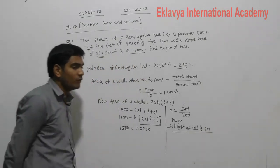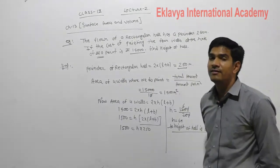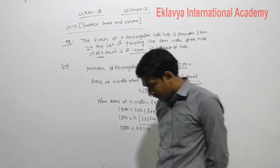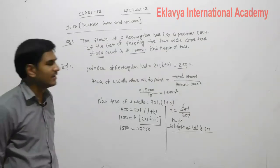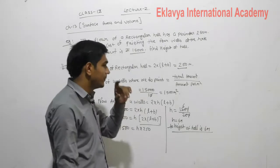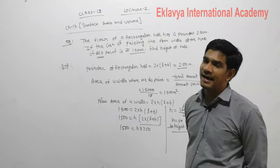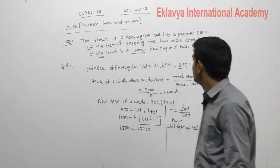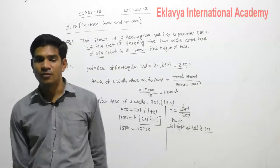To summarize: first, we found the total area of the four walls to be painted by dividing total cost by rate per meter square. After finding the total surface area of the four walls, we put it into the formula: area of four walls = 2 × H × (L + B). From there we found the height of the wall.